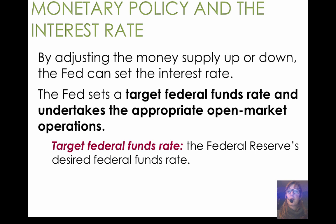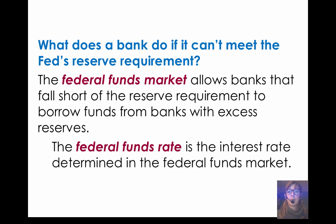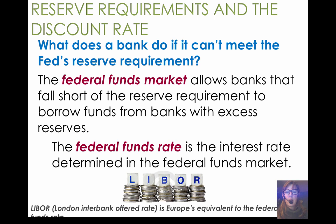So when the Federal Reserve thinks about increasing or decreasing interest rates, the one most important interest rate is the Federal Funds Rate. The Federal Funds Market exists for the purpose of allowing banks to borrow from each other, and it exists not only in the U.S. The LIBOR — the London Interbank Offered Rate — is their equivalent to our Federal Funds Rate.